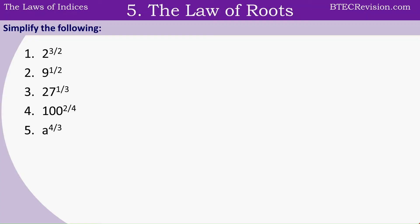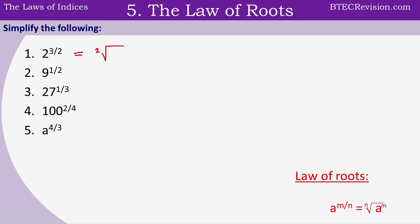Now let's move on to the fifth law, called the law of roots. The law of roots is written as a to the power of m divided by n is equal to the nth root of a to the power of m. Let's apply this to the first question: this is equal to the square root of 2 cubed, which is equal to the square root of 8. We can simplify further by separating 8 into 4 and 2, giving us root 4 times 2, which splits to root 4 times root 2. Since root 4 equals 2, this simplifies to 2 root 2, which is the most simplified version of root 8.